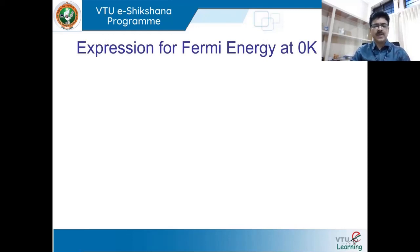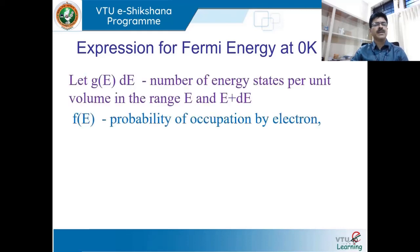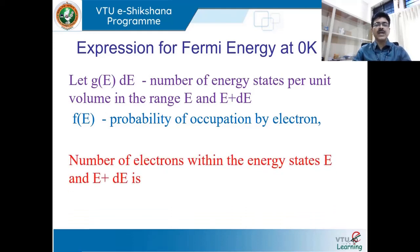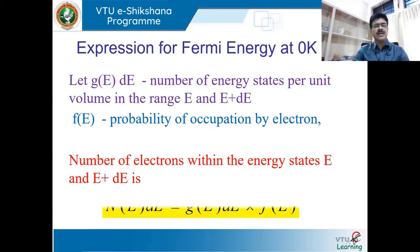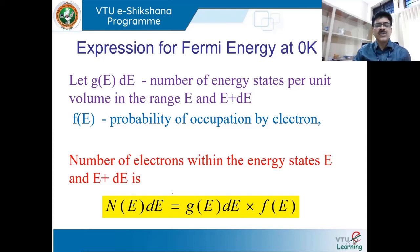Now we will derive the expression for the Fermi energy at 0 Kelvin. We already have G(E)dE as the density of states — the number of energy states per unit volume in the range E to E+dE — and F(E) as the probability of occupation of electrons. Therefore, the total number of electrons present within this energy range E to E+dE is given by N(E)dE = G(E)dE × F(E), where G(E)dE is the number of energy states and F(E) is the probability of electrons present in them.